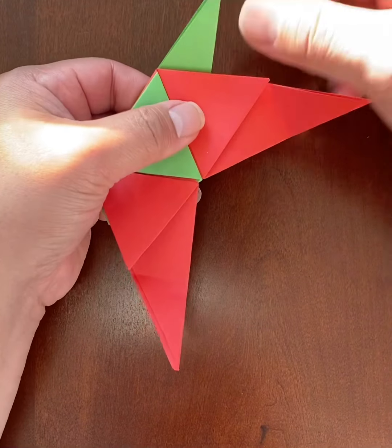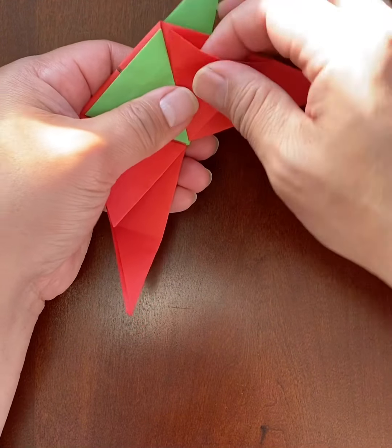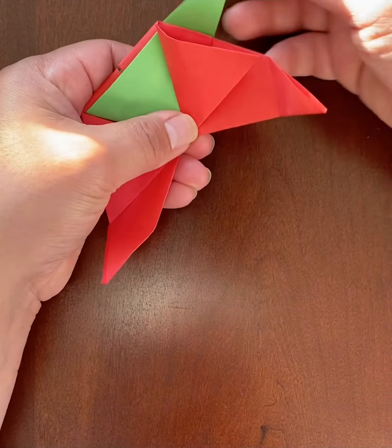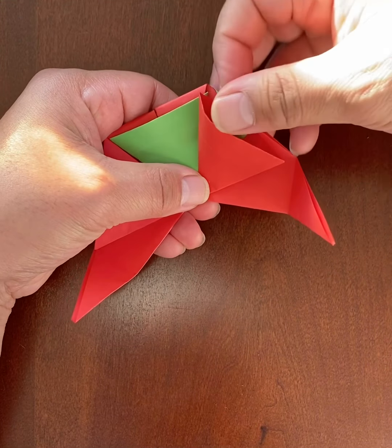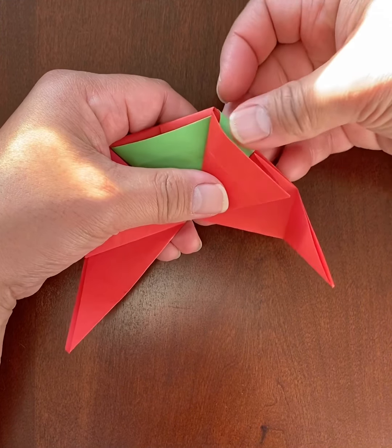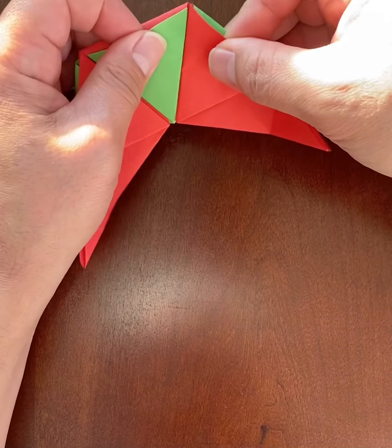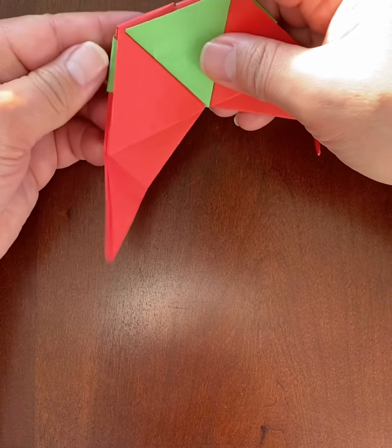So that gets hidden that way. And then on the other side, this green flap can go into this red triangle right here. At this point, this project is halfway done.